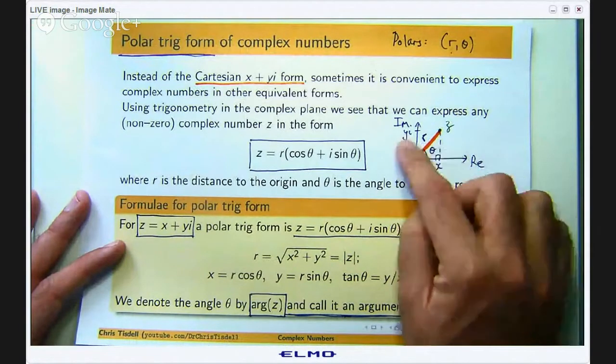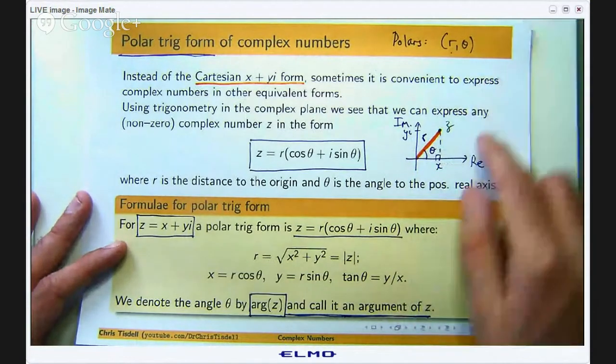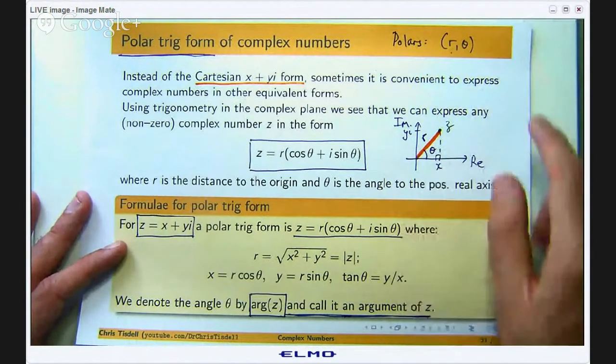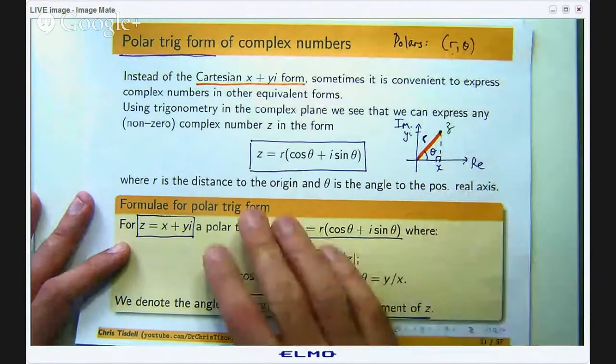That point has a distance to the origin and an angle to the positive real axis. As you rotate anticlockwise theta increases and if you go the other way theta decreases and theta is zero along the positive real axis. So that is known as the polar trig form.